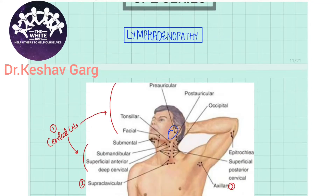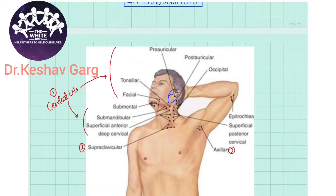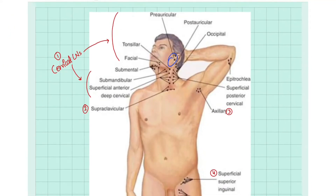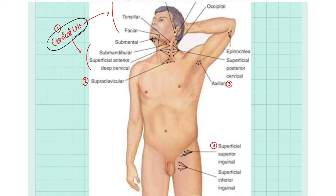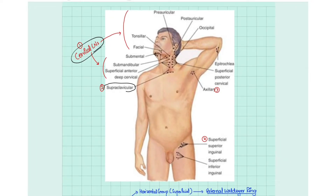In lymphadenopathy, the first thing you need to know is the different important groups of lymph nodes to look for while examining. The first is the cervical group, the second is the supraclavicular lymph nodes, the third is the axillary group, and the fourth is the inguinal group. These are the basic lymph node groups you should always look for.